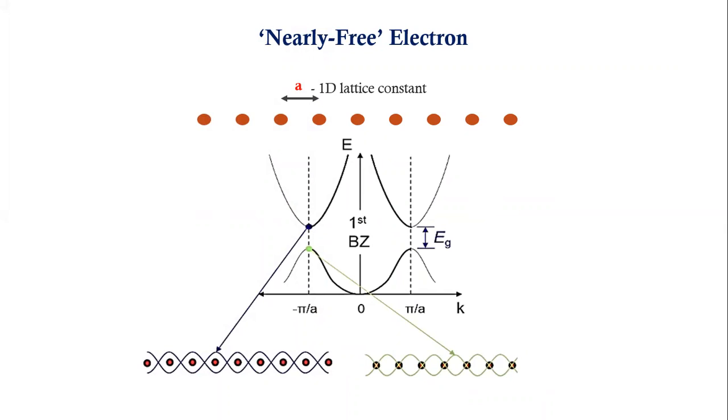One is that there is Bragg scattering when it reaches the edge of the Brillouin zone boundaries. Second, there is an energy gap that opens up due to the difference in the overlap of some electron wave functions with the ions with maximum overlap and some other electron wave functions overlap minimally. They have a difference in energy between these and thus this gives rise to an energy gap.